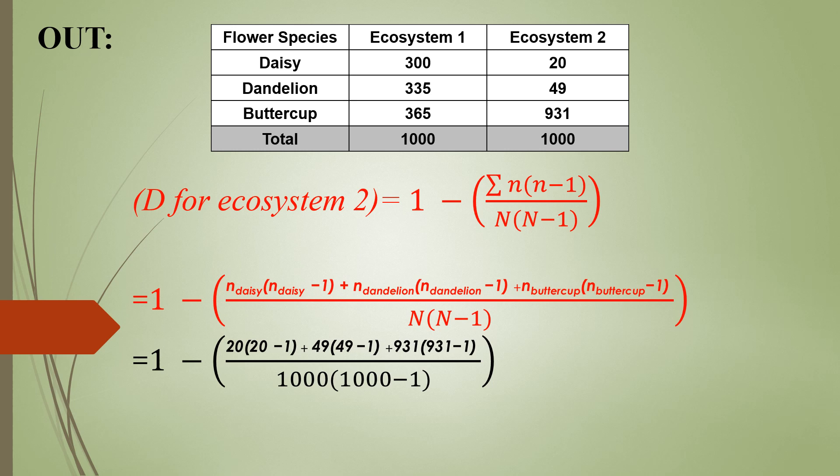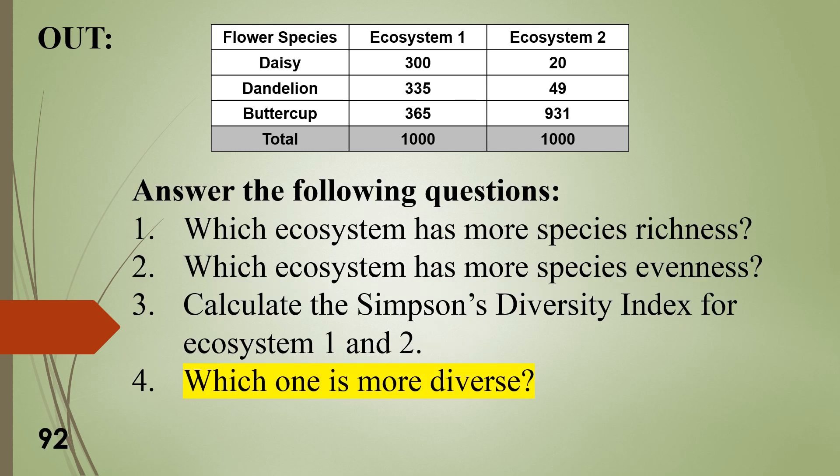I would like for you to complete the rest of this on your own. After you're done solving for Ecosystem 2, make sure that you return back and answer question number 4: which one is more diverse? Base this on the answer that you received from calculating the Simpson's Diversity Index for Ecosystem 1 and Ecosystem 2. Remember that a number closer to 1 means it has more biodiversity.